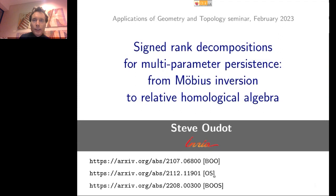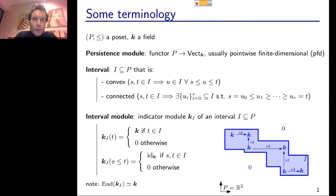Before I get down to the details of the talk, I want to set up some terminology. Throughout the talk, P is going to be a POSET and K is going to be a fixed field. A persistence module will be just a functor from that POSET to the vector spaces in that field. Most of the time I will be considering finitely presented modules, unless otherwise stated.